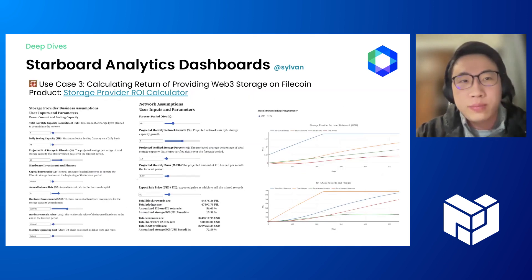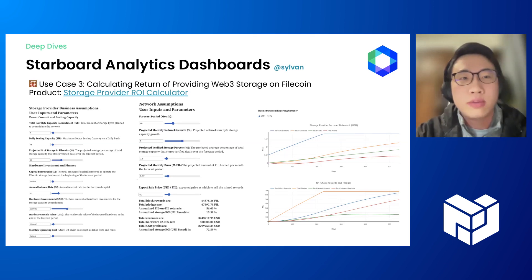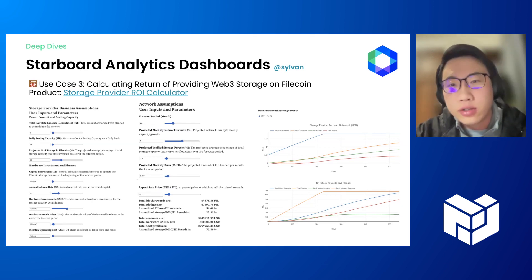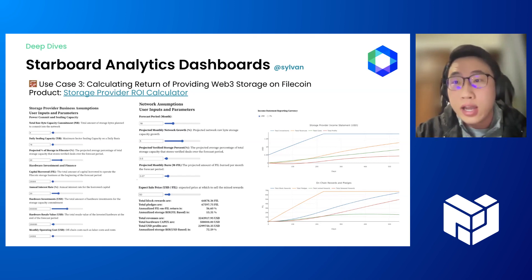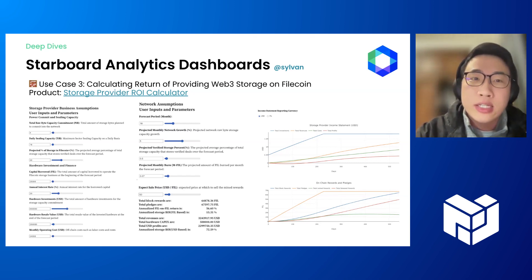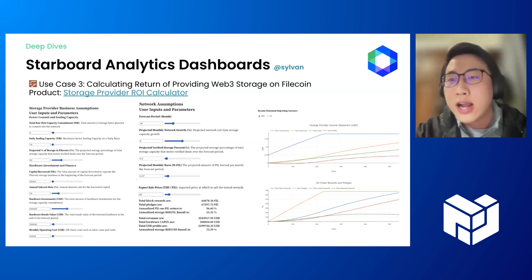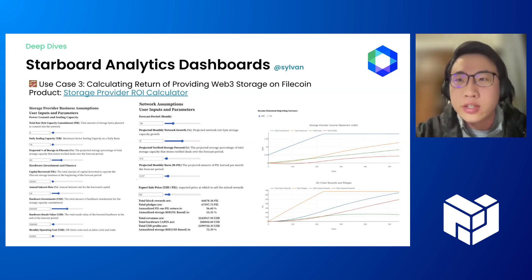The last use case is straightforward. I'm a new storage provider trying to understand my return profile for providing storage on Filecoin. I'll use the ROI calculator and input all the network and storage onboarding assumptions. It will then populate a projected income statement over the storage providing period, which can be reported in fiat currency or in FIL. It also shows on-chain rewards and vesting schedule over the forecast period, and the prediction code is open source on Observable.